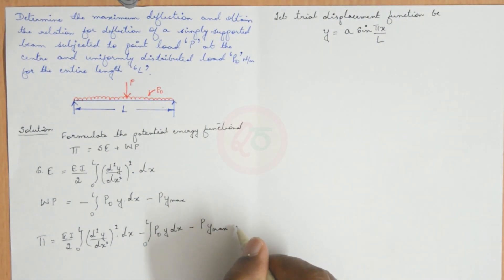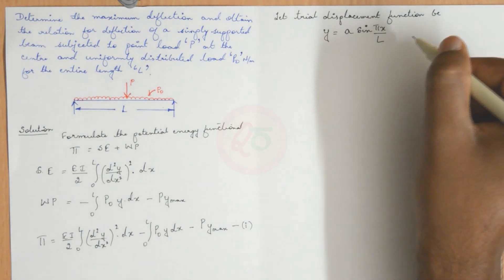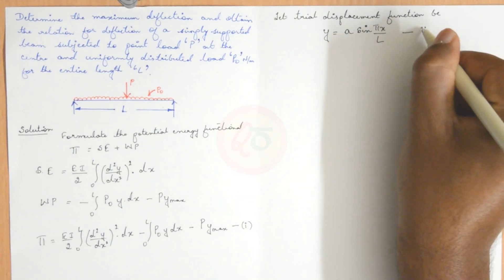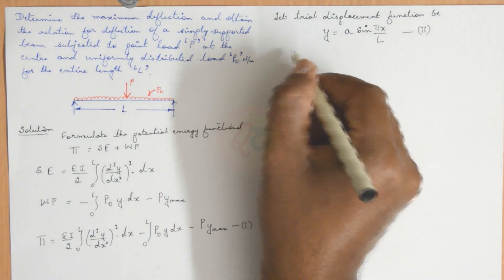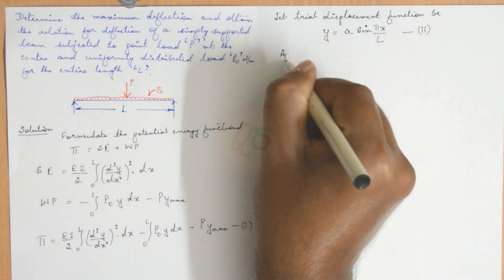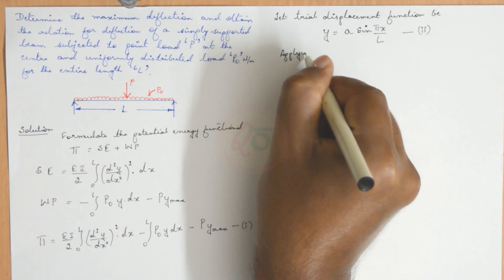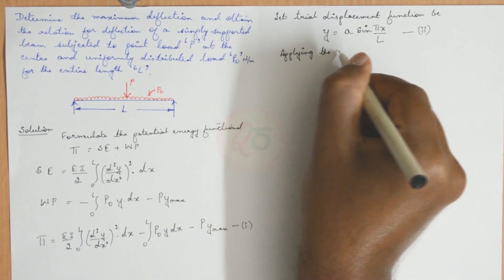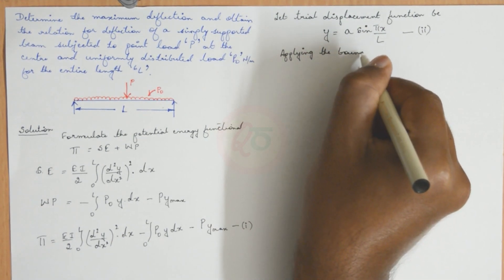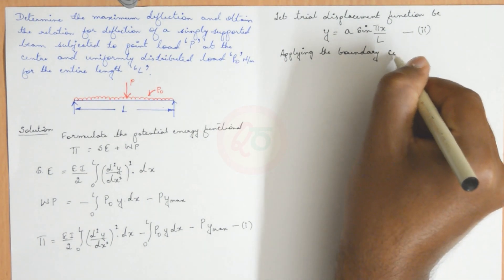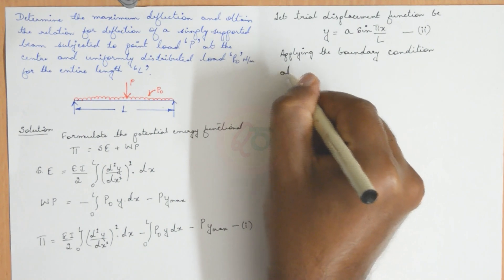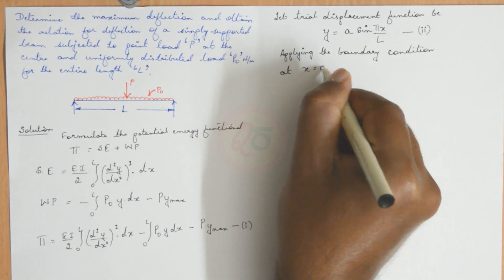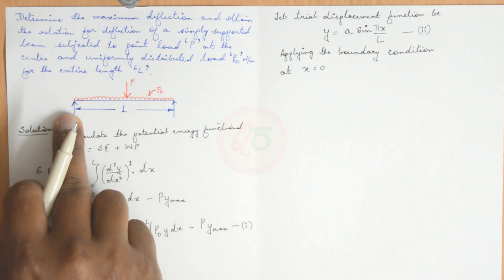Let us say this potential energy equation is equation 1 and this trial displacement function will be equation 2. Next we need to apply the boundary conditions. Applying the boundary condition, let us check at x = 0: the displacement should be 0 at the support locations.